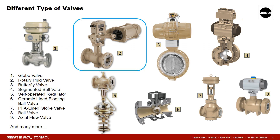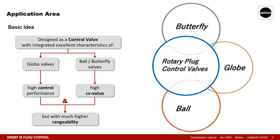The invention of the rotary plug valve goes back to the 1970s. As already mentioned, every valve type has its pros and cons. The globe valve, for example, is well accepted for excellent control behavior, whereas butterfly and especially ball valves perform best in the area of high CV values. Rotary plug valves combine the best of both worlds — excellent control behavior and, due to an outstanding rangeability, the ability not only to control high throughputs like ball and butterfly valves, but also smaller flows.